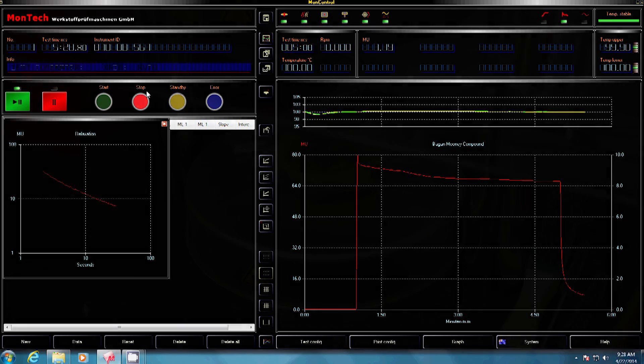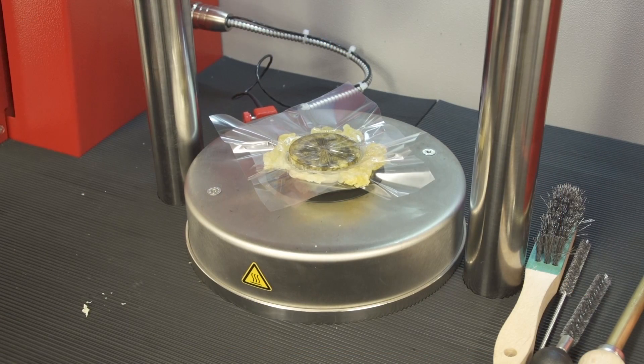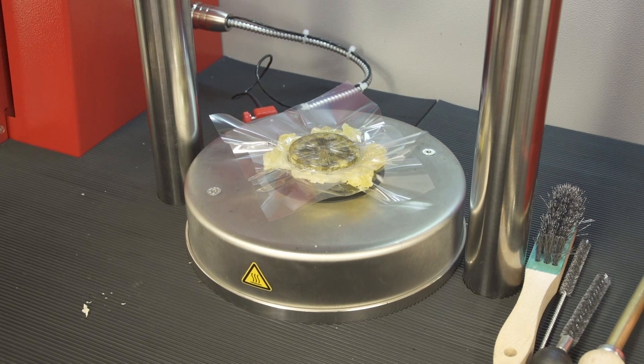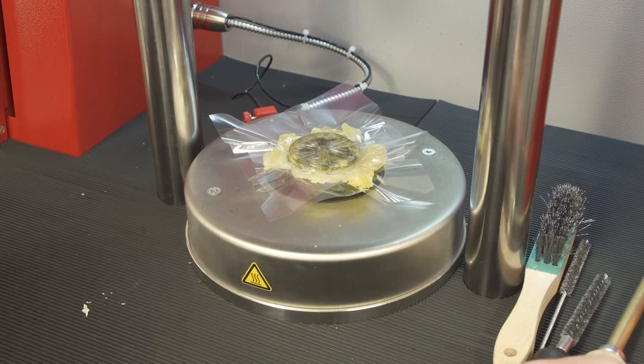Once the test is completed, safety shield and dies will automatically open. The rotor and tested material can be removed from the die.